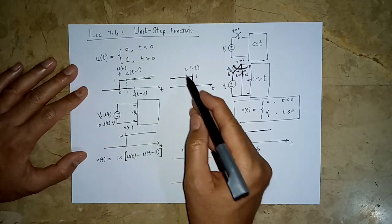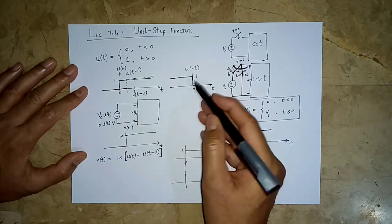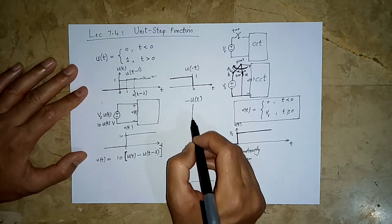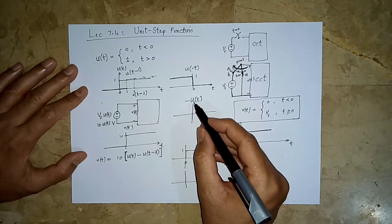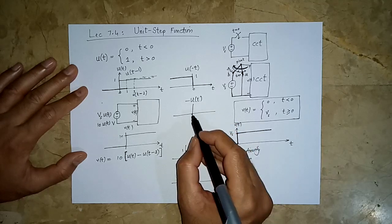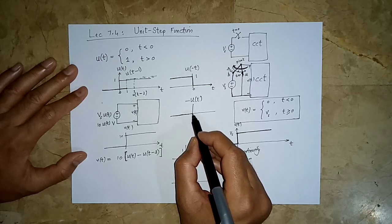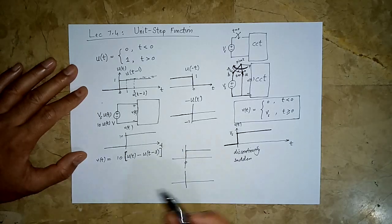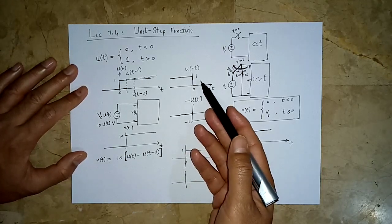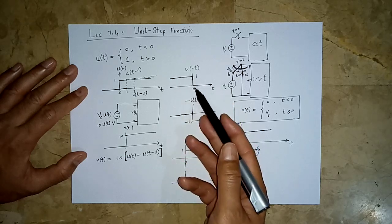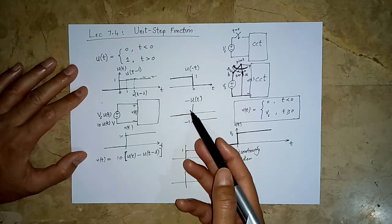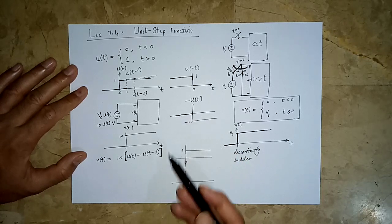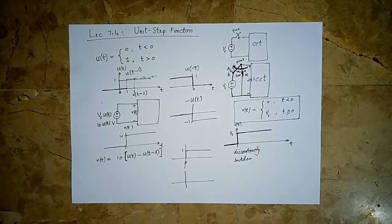Note the difference: -u(t) is not u(-t). If u(t) is our standard step, then -u(t) flips the function values: when it was zero it remains zero, but when it was one it becomes minus one. So all positive values become negative, and any negative values would become positive.